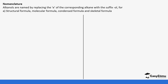Alcohols are usually named by replacing the 'e' in the corresponding alkane with 'ol'. So for example, we have methane — if we were to get the alcohol, it's going to be methanol. You can see we have changed the 'e' with 'ol'.